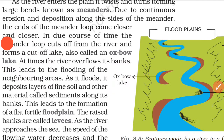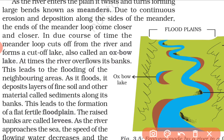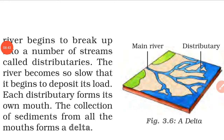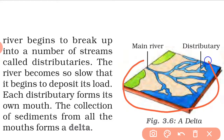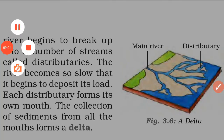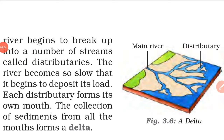Sometimes floods also occur in such places. The river deposits layers of fine soil and other material called sediments along its banks, leading to the formation of flat, fertile floodplains. The raised banks are called levees. When the river breaks up into a number of streams called distributaries, the river becomes so slow that it begins to deposit its load, forming a delta.